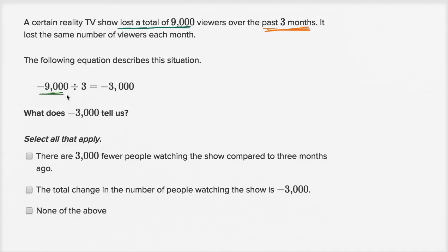So it lost a total of 9,000 viewers, and it did it over three months. So what they're figuring out here is, what was the change in viewership, what was the change in viewership per month? So it tells us, the negative 3,000 tells us that they lost, on average, on average, and actually it tells us they lost the same number. So this is actually, it's the same number every month. So they actually lost 3,000 viewers every month. So let's see which of these choices match up to that.